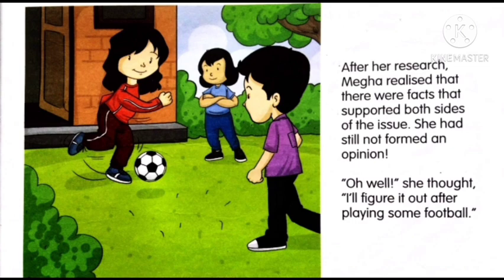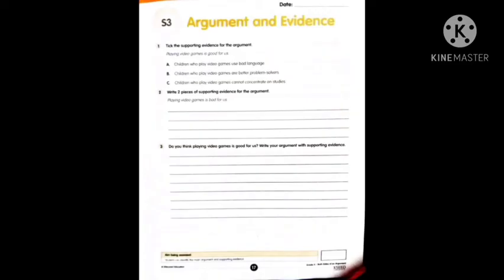It is better to play outdoor games than to sit with video games and play. But still, using less time for video games and more time for outdoor exercises and games can help improve our mental ability. Playing outdoor games is better — we become mentally strong and get pure air. Now let us write our views on both arguments. For the activity: take supporting evidence for the argument, write two pieces of evidence for why playing video games is bad, and finally write your own argument on whether playing video games is good or bad with supporting evidence.